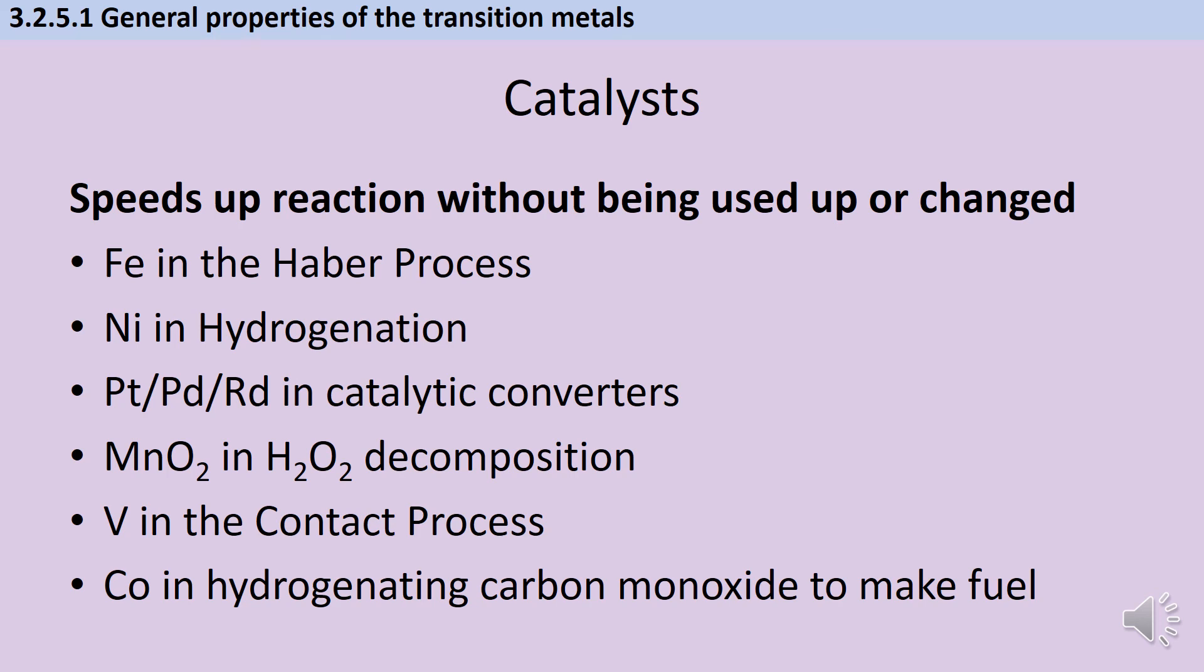You've already met throughout GCSE and A-level a number of instances where this is the case. For instance, the use of iron as the catalyst in the Haber Process to make ammonia, the use of nickel when you're turning unsaturated fats into saturated fats by hydrogenating them, the use of platinum and other platinum group metals like palladium and rhodium in catalytic converters reducing the amount of carbon monoxide and NOx coming out of car exhausts. You've probably used manganese dioxide in the decomposition of hydrogen peroxide. There's also the use of vanadium and vanadium oxides in the Contact Process, which is used to make sulfuric acid, and also cobalt.